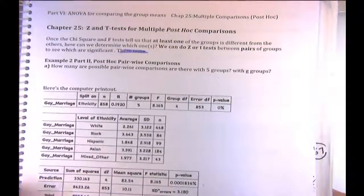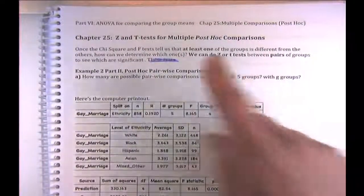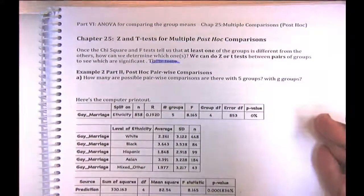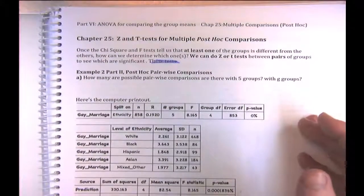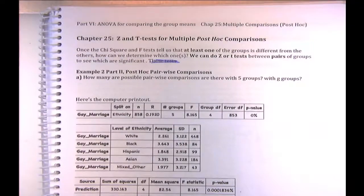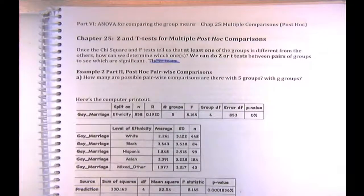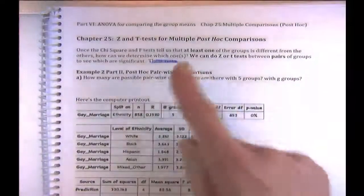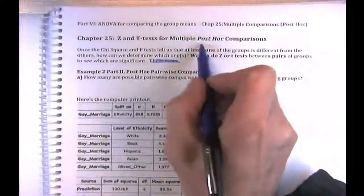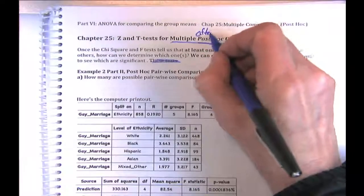We'll have to tweak our p-value for post-hoc testing. With lots of different comparisons available, just by the luck of the draw, 5% of them will be significant even when there's no real difference. We have to adjust our p-values for multiple post-hoc comparisons.